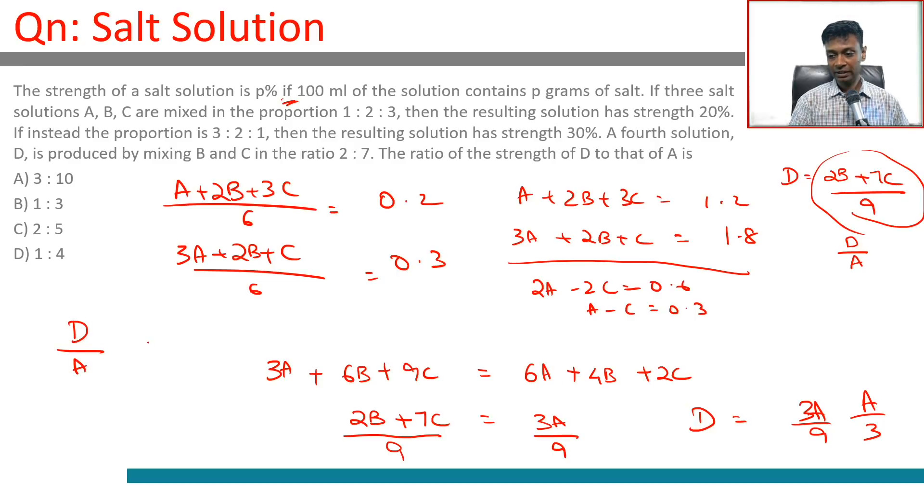We want the ratio D by A. D equals A by 3, or D by A is 1 by 3. 1 is to 3. It's absolutely wonderful!